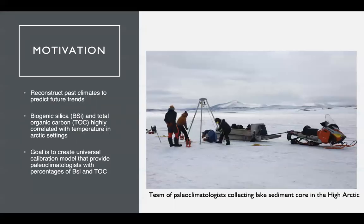Before I dive into the statistical analysis and details of this project, I want to give some brief motivation and background information. Paleoclimatology is the study of past climates, and paleoclimatologists reconstruct past climates to gain insight into various temperature trends that occurred over time. In high Arctic settings, biogenic silica and total organic carbon — referred to as BSI and TOC — are two proxies used to study temperatures, where typically higher BSI and TOC levels indicate warmer temperatures. Paleoclimatologists extract BSI and TOC percentages from lake core samples to understand what the temperature was like in that environment. The main goal of this work was to create a universal calibration model that will provide paleoclimatologists with percentages of BSI and TOC so they can compare results across various localities and share meaningful results with other researchers.